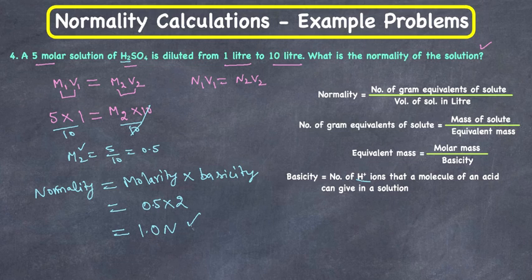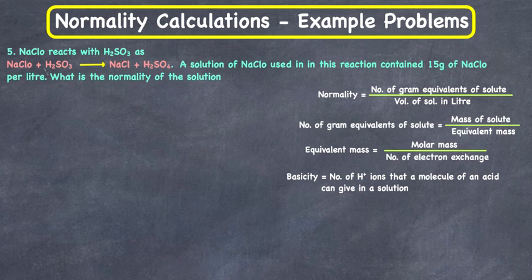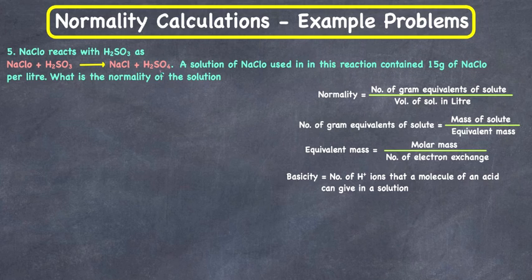Next example: NaClO reacts with H₂SO₃ — NaClO + H₂SO₃ → NaCl + H₂SO₄. The solution of NaClO used in this reaction contains 15 grams of NaClO per liter. They are asking us to calculate the normality of the solution.